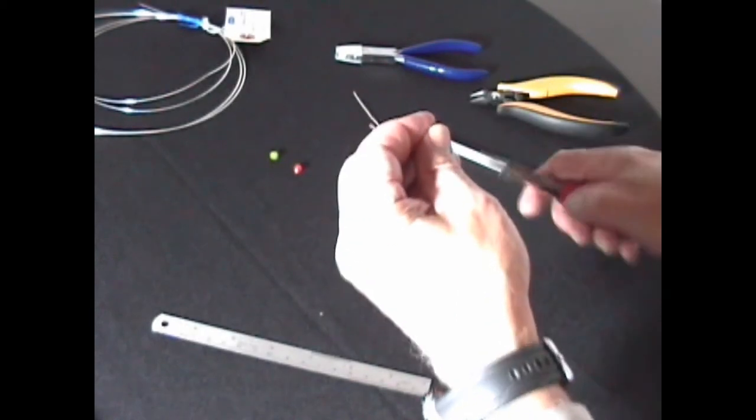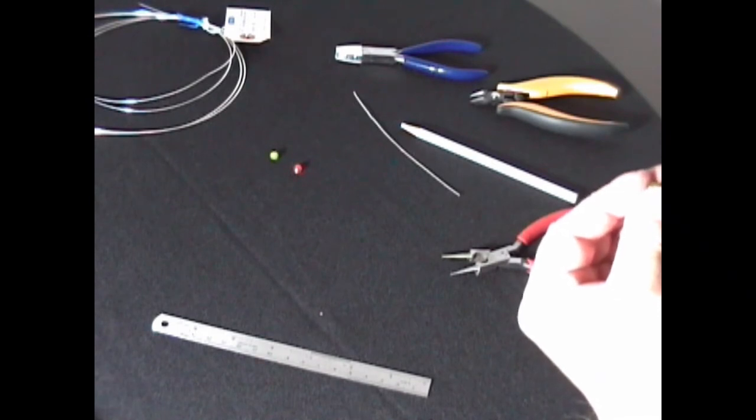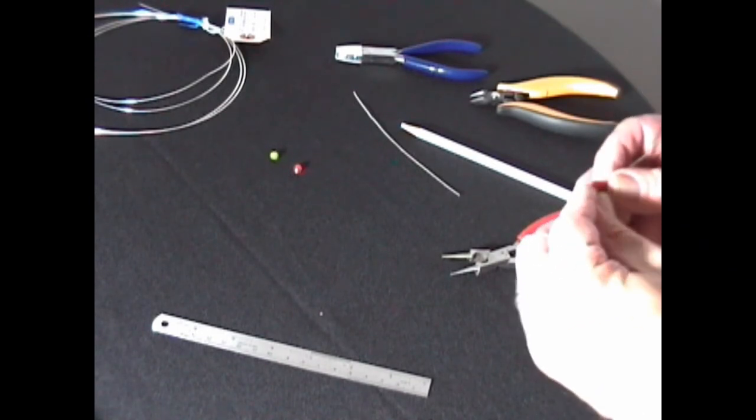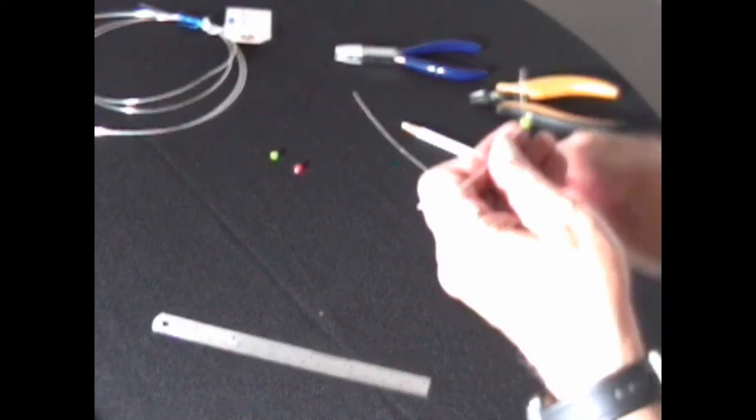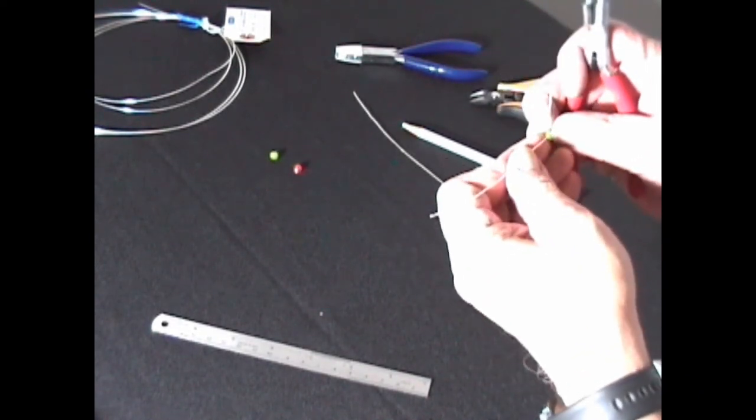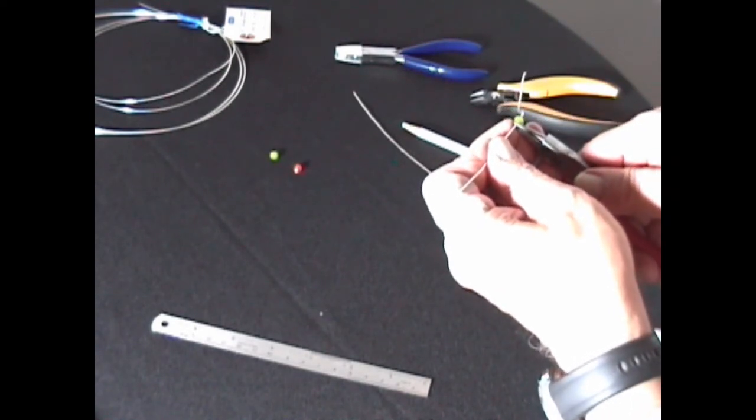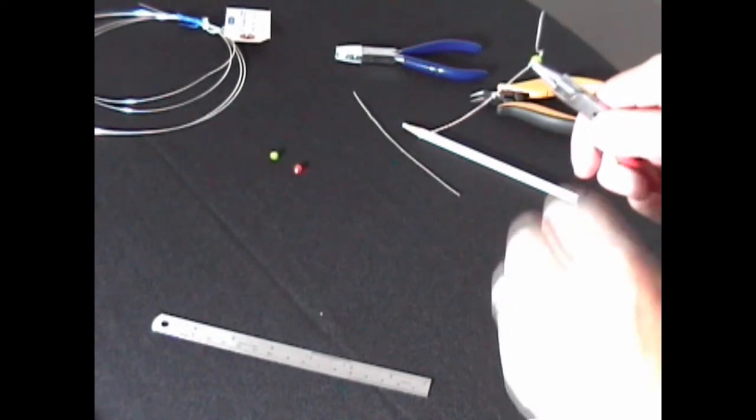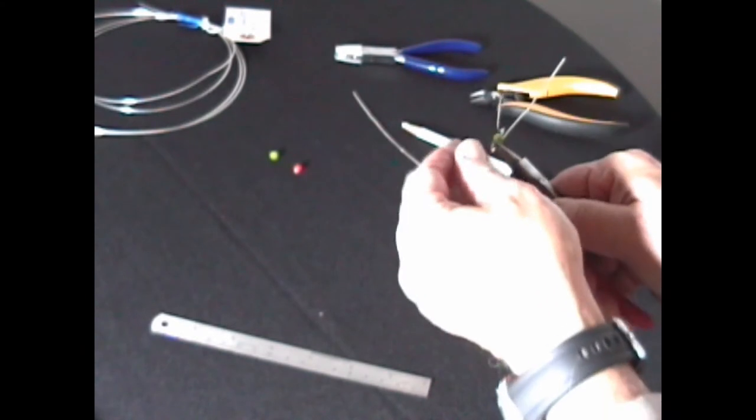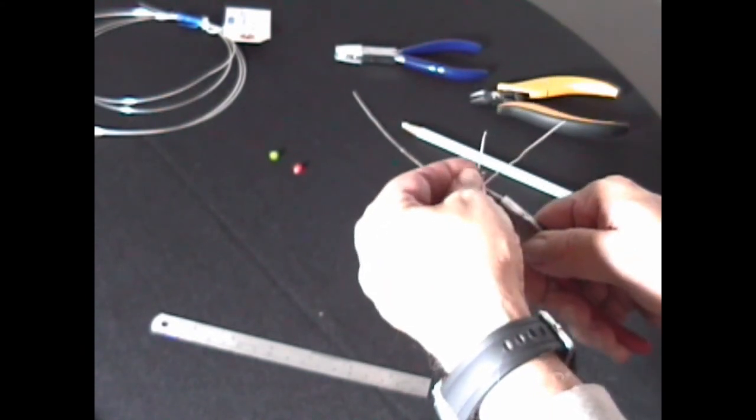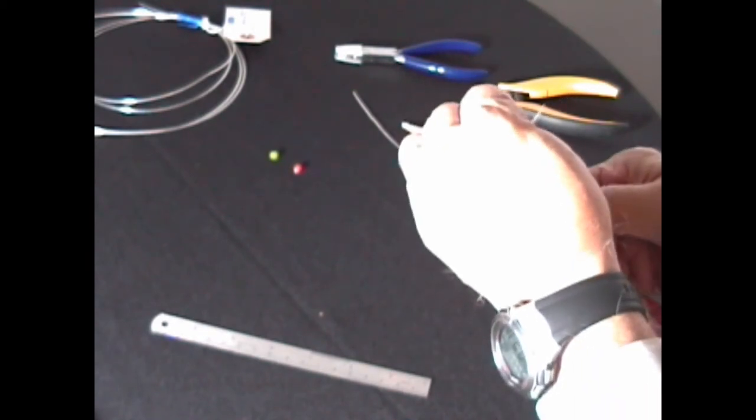Thread through one of your green beads all the way to the bend. Then, right next to the end of the bead, grab the wire and bend it 180 degrees so it's roughly parallel to the piece that you bent on top.